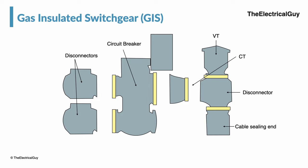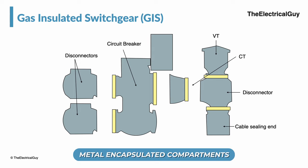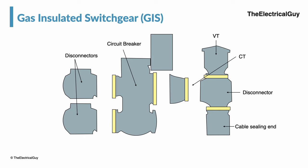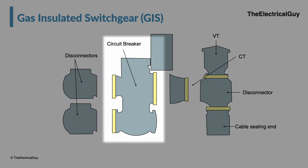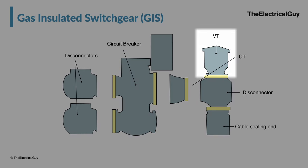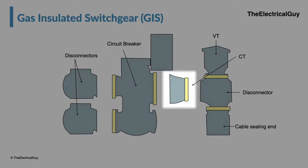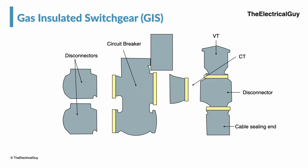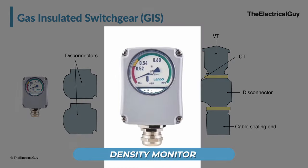All the switchgear are placed in metal encapsulated compartments. Further, GIS is subdivided into different modules or zones. For example, the circuit breaker will have its own dedicated module. Similarly, the voltage transformer, current transformer, and all other switchgear will have their own separate modules. The bus bar will have its own module as well. Each module will have SF6 gas filled in it, and the SF6 gas pressure inside each module can be monitored separately using a dedicated density monitor provided with each module.